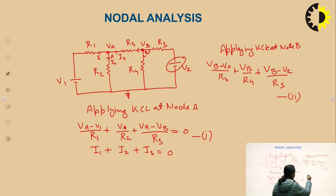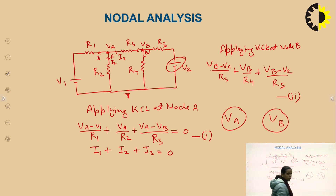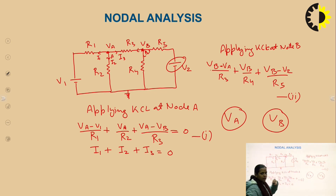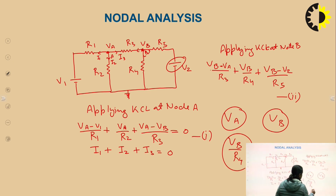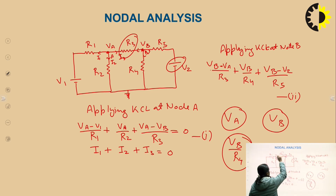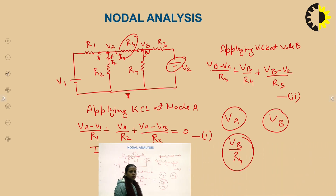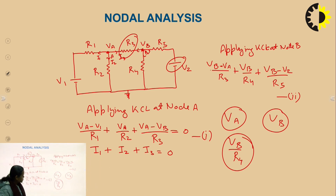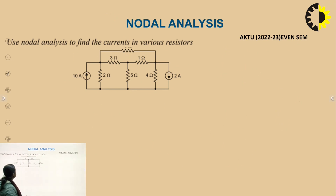After solving these two equations, we can find the values of VA and VB — the node voltages. After finding these voltages, we can easily find the branch currents. For example, the current in R4 equals VB/R4, and the current in R3 equals (VA − VB)/R3. This is how we solve a nodal analysis problem. Now we will go through some examples.